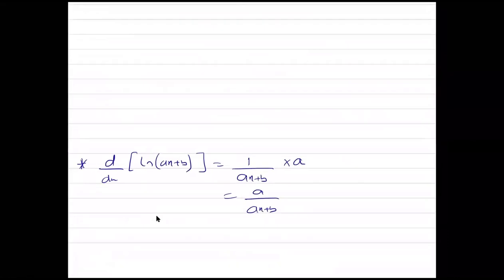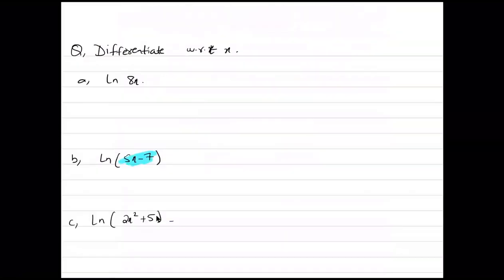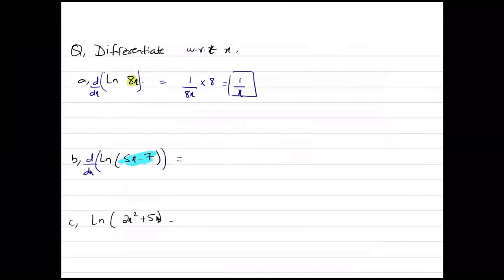As a general rule, if y equals ln of ax plus b, then dy by dx is 1 upon ax plus b times a, which simplifies to a upon ax plus b. For example, differentiating ln 8x: 1 upon 8x times 8 gives 1 upon x. For ln of 5x minus 7: 1 upon 5x minus 7 times 5 gives 5 over 5x minus 7.